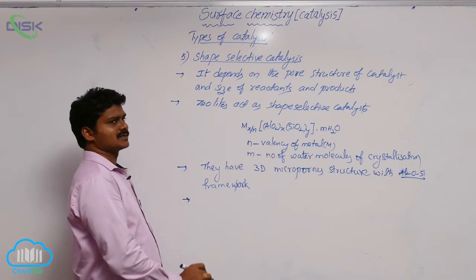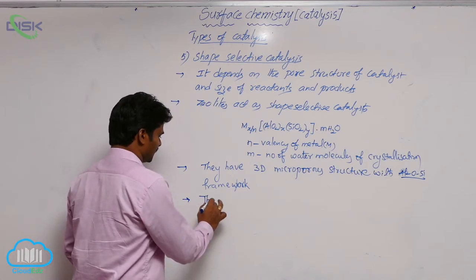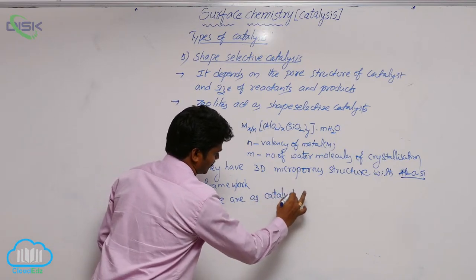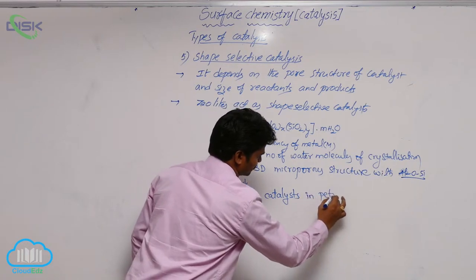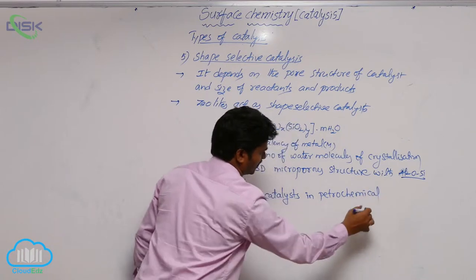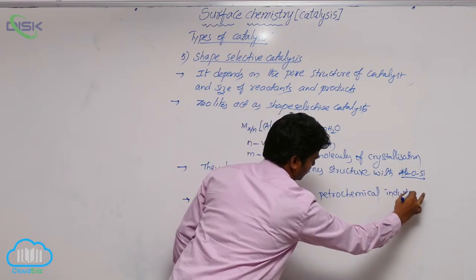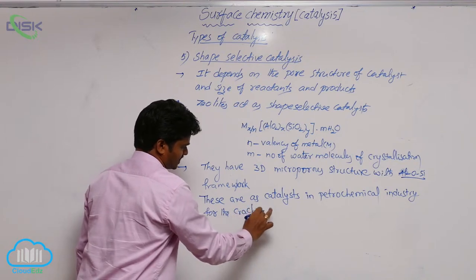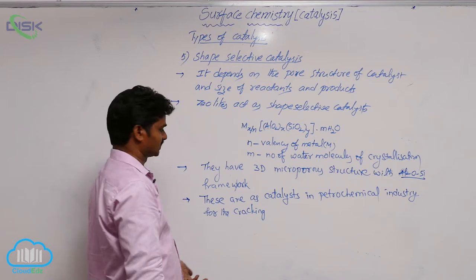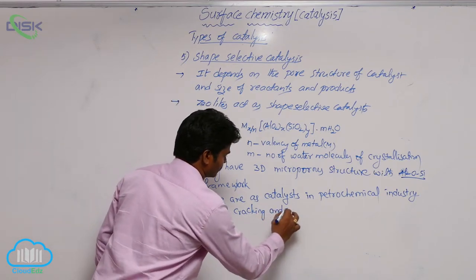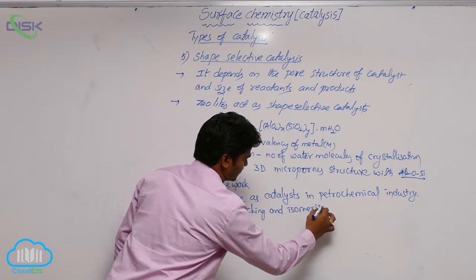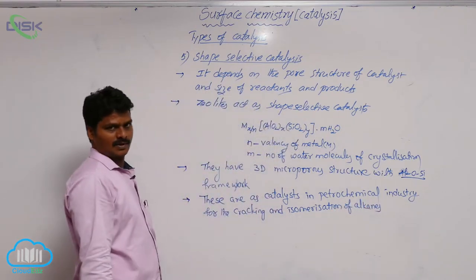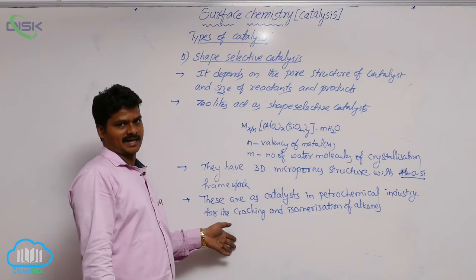Where are zeolites used as catalysts? Zeolites are used as catalysts in the petrochemical industry for the cracking and isomerization of hydrocarbons.